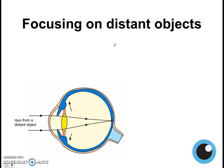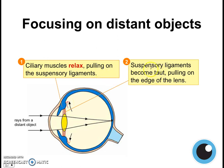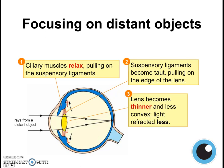So how about focusing on distant objects? For distant objects, the light rays come into your eye quite parallel, so they don't need to be bent so much. The lens needs to be not so thick and not so convex. It's the opposite: the ciliary muscles will relax. When they relax, they bunch up less and move away from the lens. When they move away from the lens, they end up pulling on the suspensory ligaments more, causing the ligaments to become taut and tight, which pulls on the lens, causing it to become thinner and less convex. Now the lens is thinner, light is refracted less, and it focuses on the retina for a distant object.